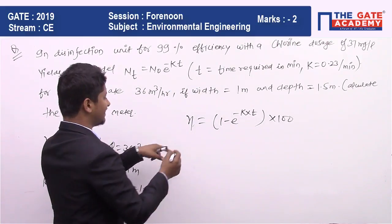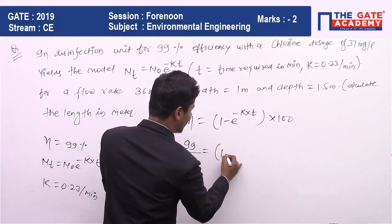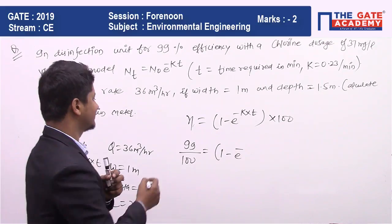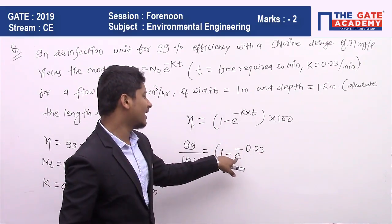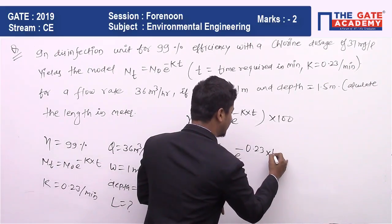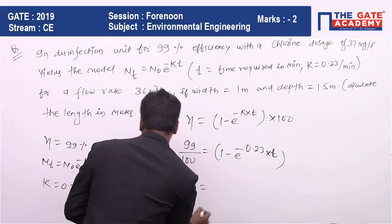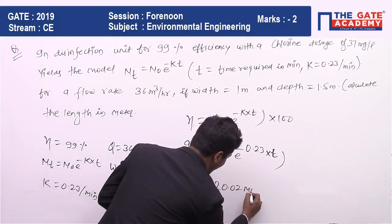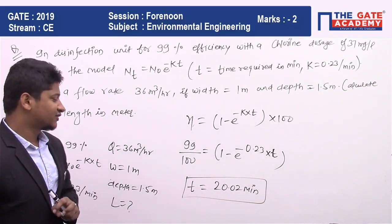So η is given, that is 99 upon 100, and that will be equal to 1 minus e to power minus K. K is given to you, that is 0.23, so it will be minus 0.23 into time. So time, after calculation which you are getting, that is nothing but 20.02 minutes.